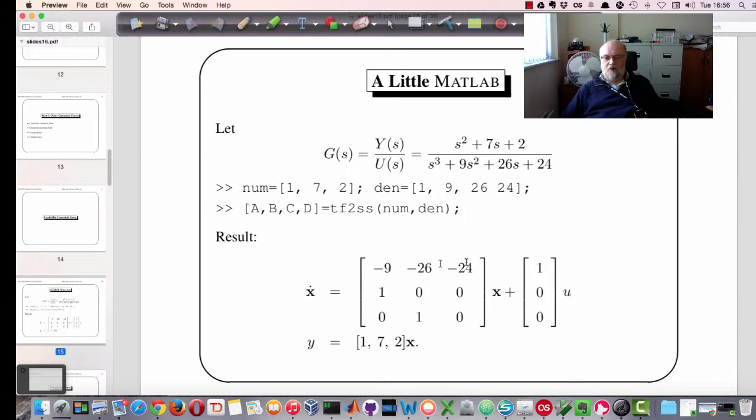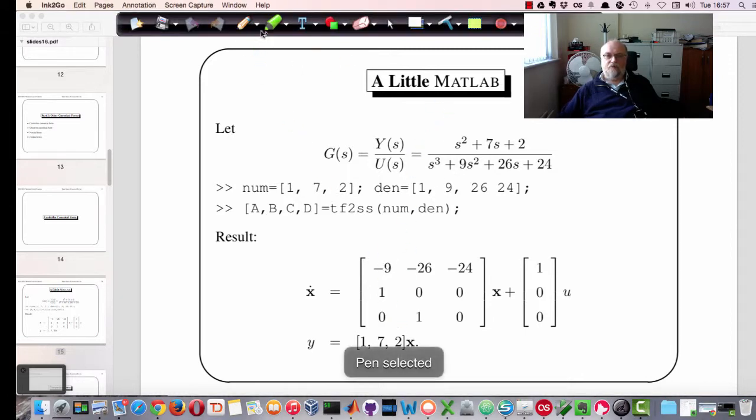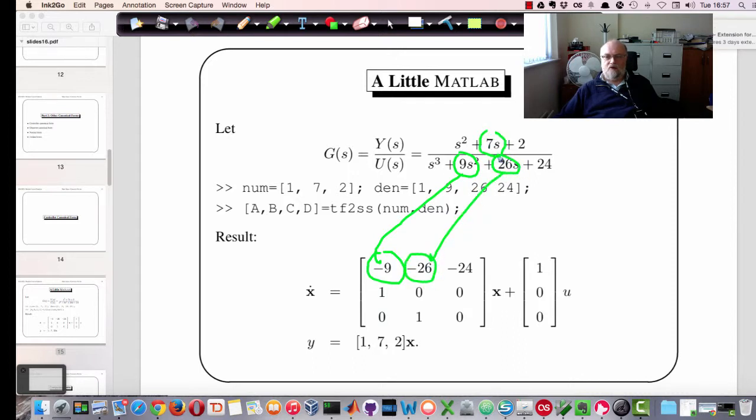It looks similar to the companion form in that the coefficients match up across the transfer function. You can see the coefficients appearing in the various matrices, but they're in different places. The numerator is no longer in the B matrix, for example, it's in the C matrix.